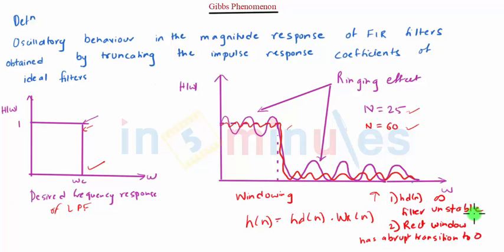Now we have to find a solution to reduce the Gibbs phenomenon. The major reason that the Gibbs phenomenon exists is due to the severe discontinuity existing in the rectangular window.